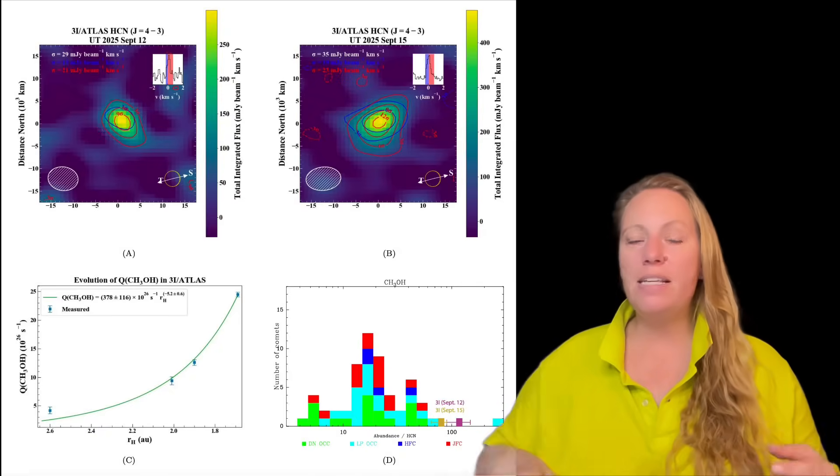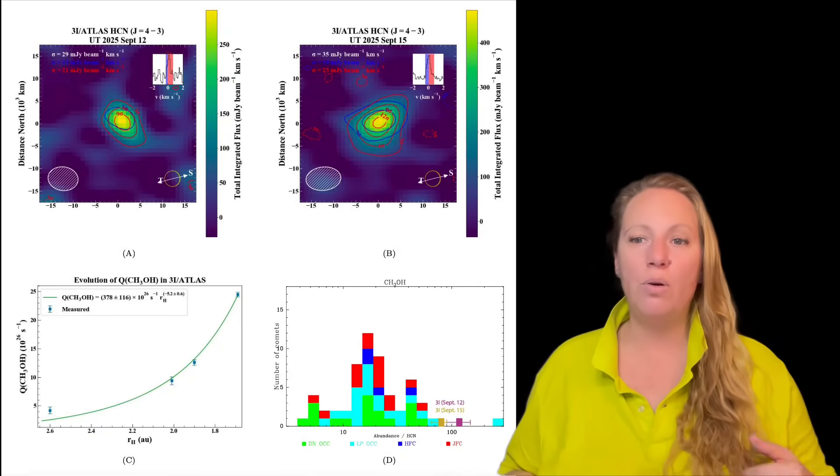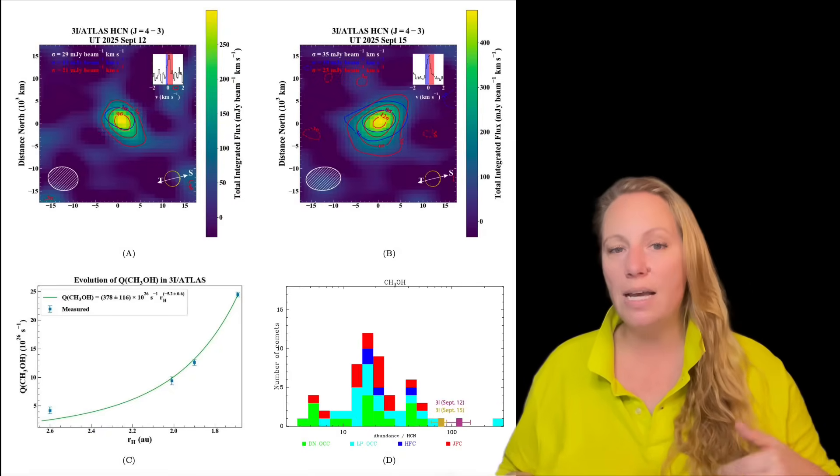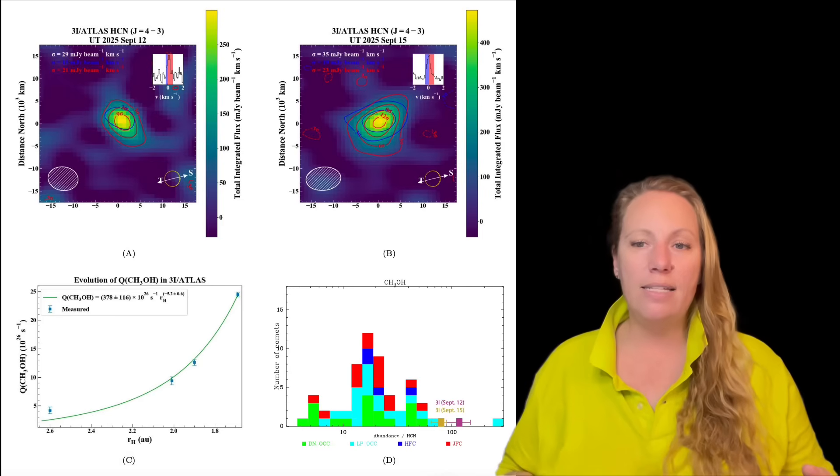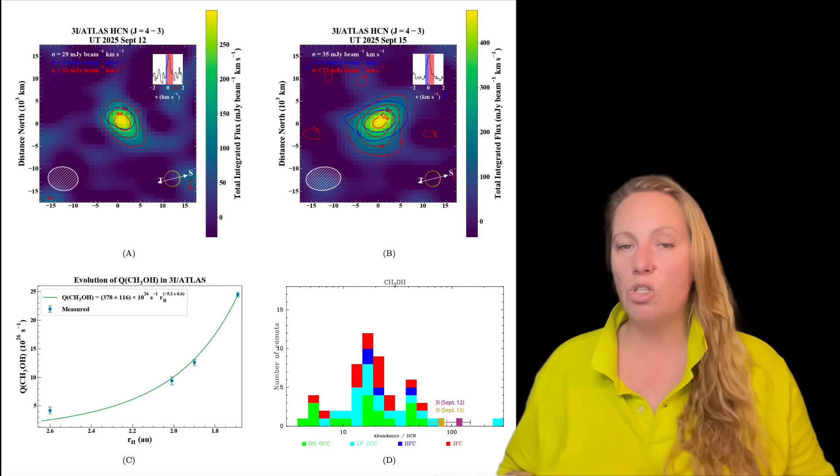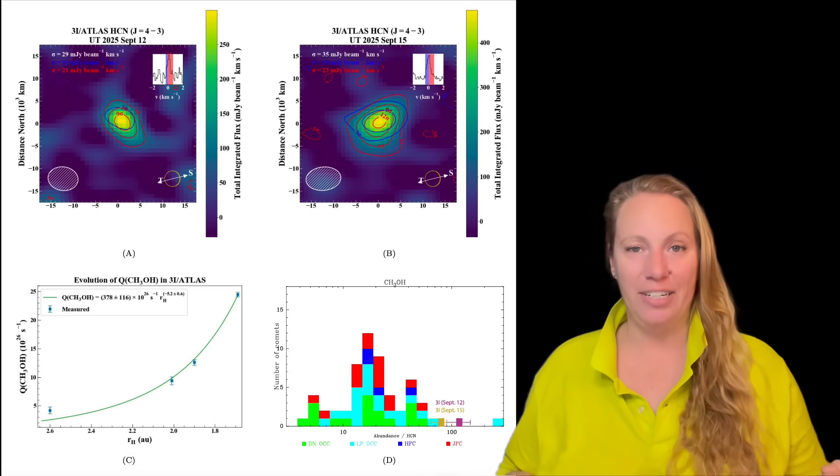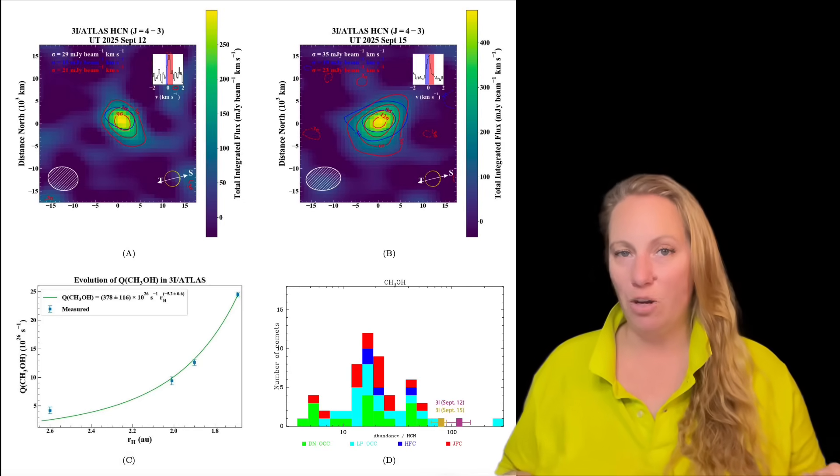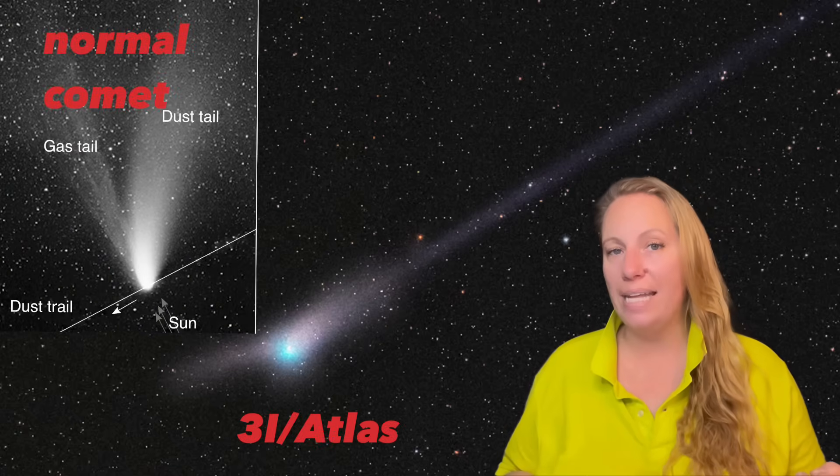Here's exactly what remains uncertain about 3I/ATLAS and why this matters. We don't know if this chemical mix - the methanol, the hydrogen cyanide, the CO2, the dust, the metal content - is natural for something that formed in another solar system, or if it's intentionally engineered. We really can't compare. We don't know why it jets material towards the sun, sun-locked, instead of away from the sun like comets usually do. That basically breaks the textbook physics for comets.